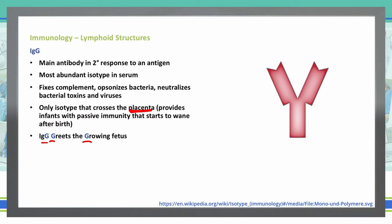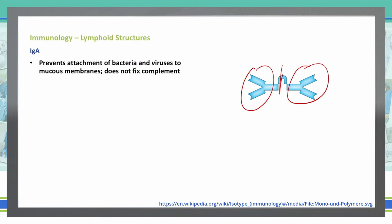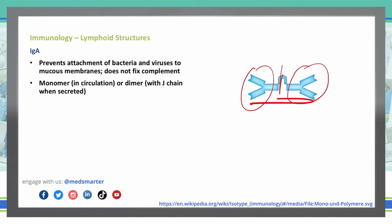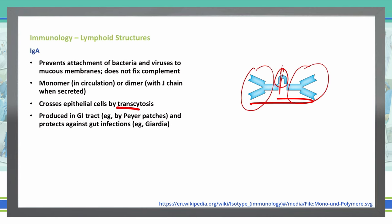IgA is a dimer — two monomers connected together. These will prevent the attachment of bacteria and viruses to the mucous membranes. A lot of times you see these function on the mucous membrane areas, such as in the lungs and in the GI tract, and they do not fix complement. In circulation you'll see these as monomers, but when they are secreted, that is where you see them as dimers fixed with a J-chain. These cross through epithelial cells using transcytosis. They're produced in the GI tract — specifically the Peyer's patches — and they protect against infections like Giardia.